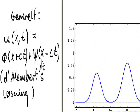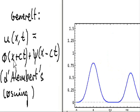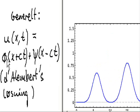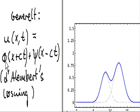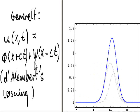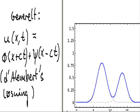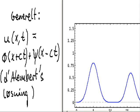In this situation, the solution u(x,t) will be a sum of two functions, one function moving to the left and another to the right.